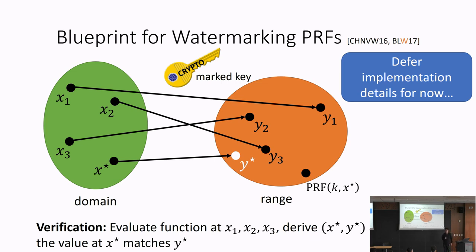This is a secretly verifiable watermarking scheme — both the marking algorithm and the verification algorithm share a secret key. The verification algorithm chooses these special points x1, x2, x3, evaluates the circuit, and because it's functionality-preserving, the marked circuit agrees on these points. From these evaluations, it derives the special point x* and y*, then simply checks whether the target circuit computes y* at x*.